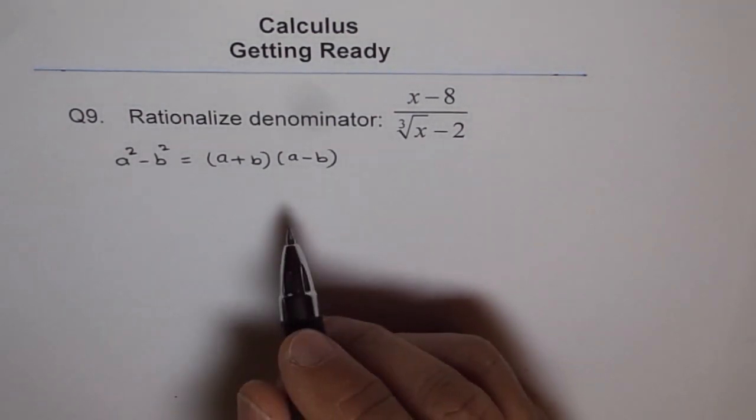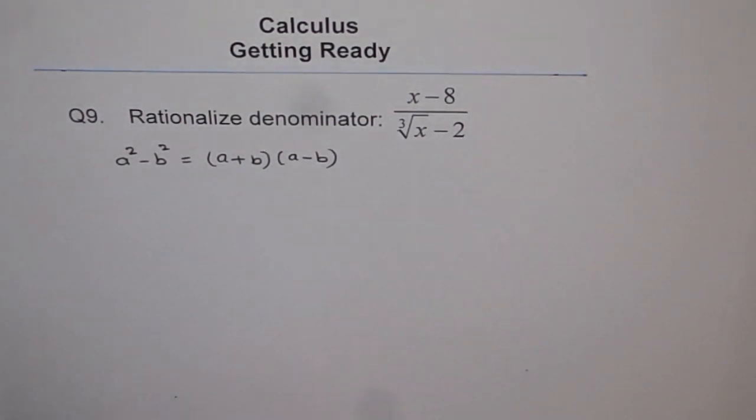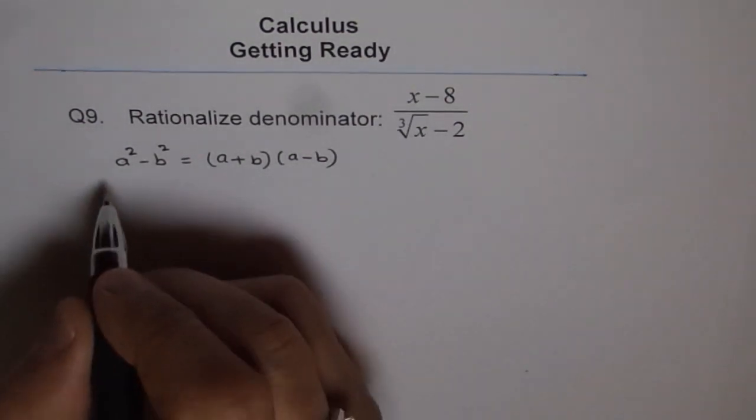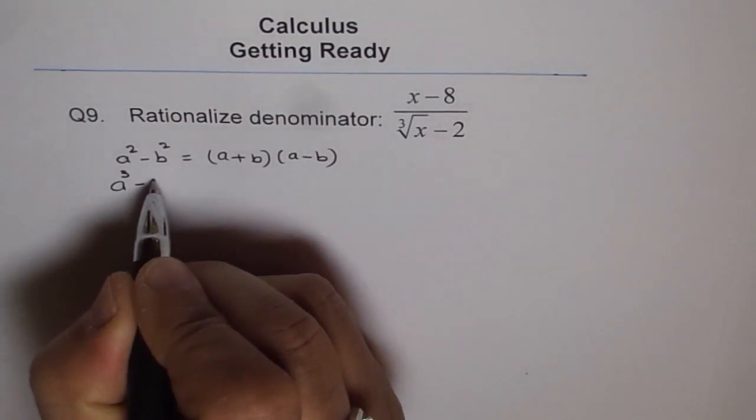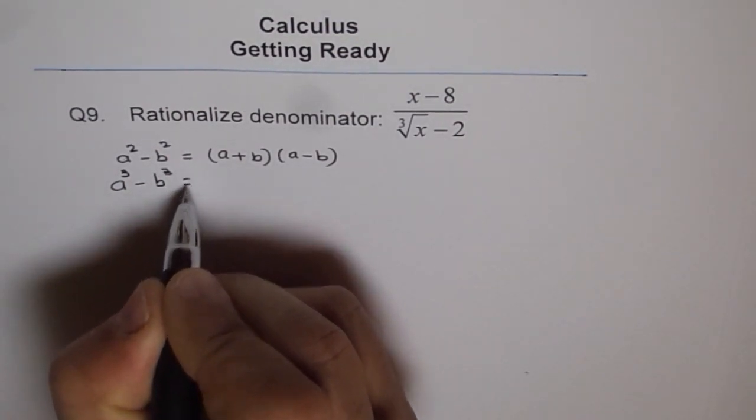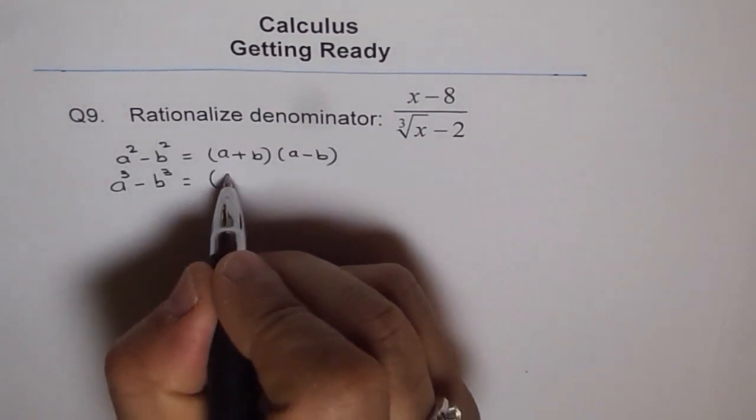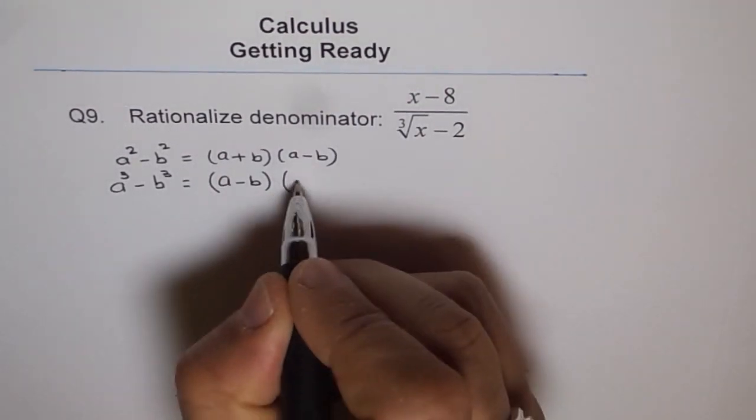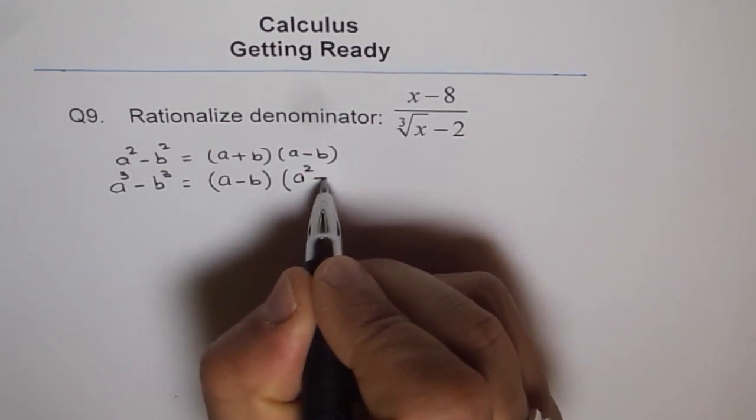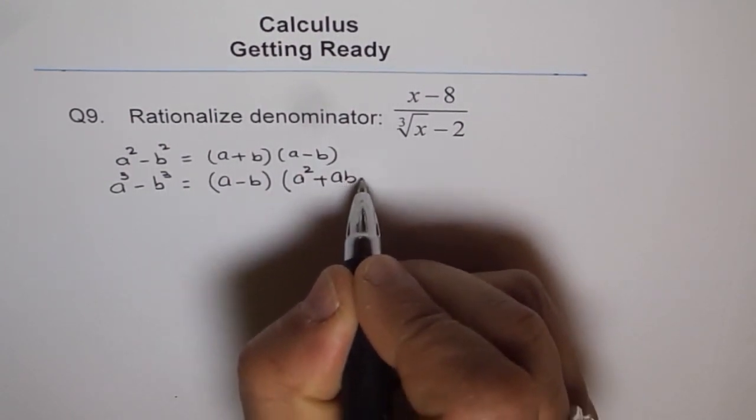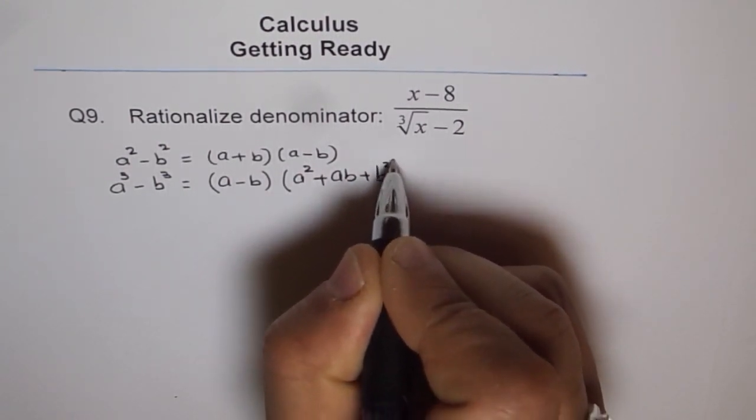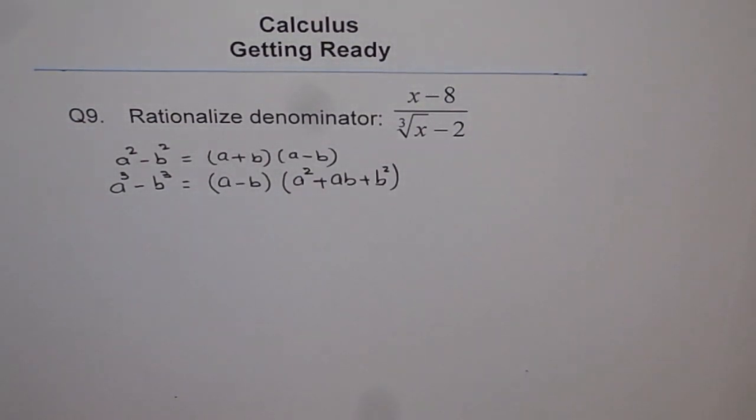Well, what should you do for the cubes? For the cubes, you have to apply difference of cubes. Do you remember a cube minus b cube formula? That is a must to remember. It is a minus b times a square plus ab plus b square. That is the formula you should remember to rationalize cubes or difference of cubes.